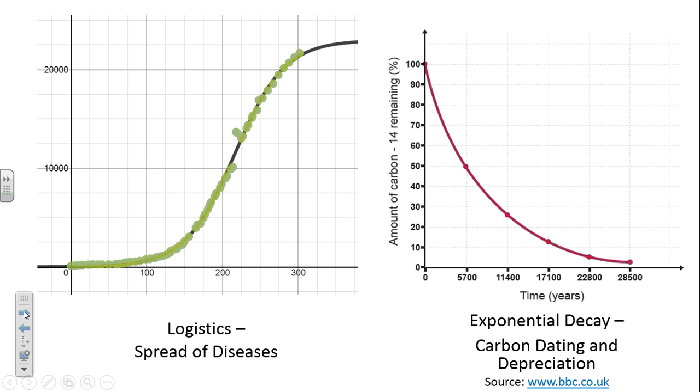The second one is called exponential decay, and it's often used in carbon dating and also in depreciation. If you're going into business, you will use an exponential decay model when you're depreciating out your fleet of cars, your copiers, your office equipment. If you're a scientist and you're doing anything with carbon dating, carbon-14 and so forth, to find out how old a fossil is, you'll be dealing with exponential decay as well.